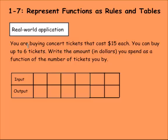Let's do a real-world application then. You are buying concert tickets that cost $15 each. You can buy up to six tickets. Write the amount in dollars you spend as a function of the number of tickets you buy. So the input would be the number of tickets, and that would be our independent variable because we can always determine how many tickets we want to have.